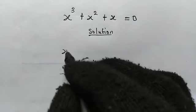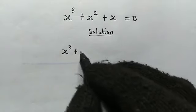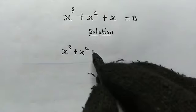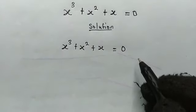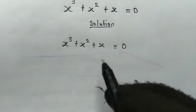From here we have x cubed plus x squared plus x, this is equal to 0. Now from here.